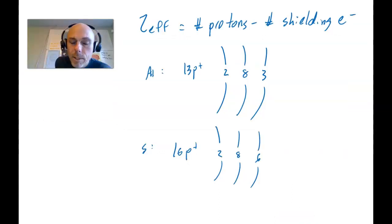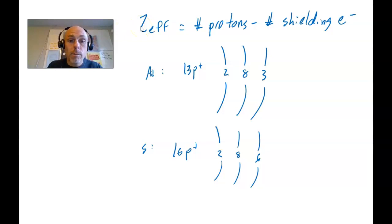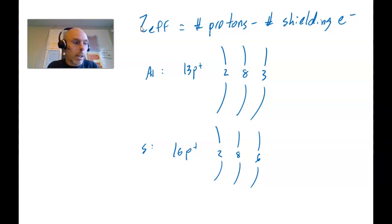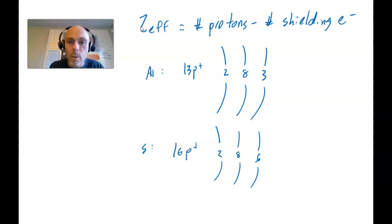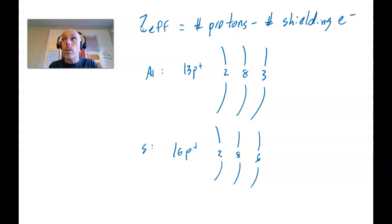Hugely important concept: effective nuclear charge. It explains a lot about how atoms behave. The formula for effective nuclear charge is on this page, and I'll show you a shortcut in a moment. This is on page 334 of our textbook. The effective nuclear charge is found by taking the number of protons in the nucleus and subtracting from that the number of shielding electrons. Shielding electrons are all of the electrons that are not valence electrons.